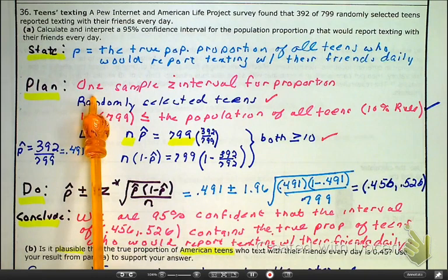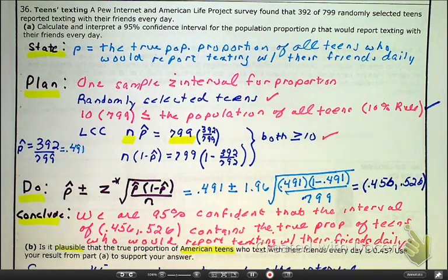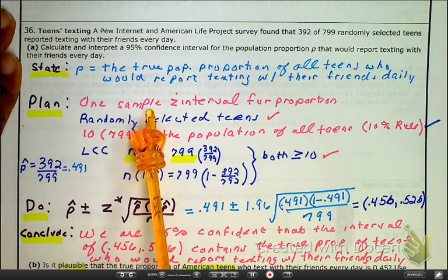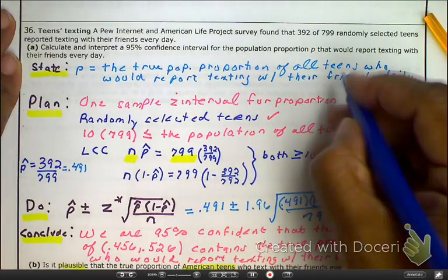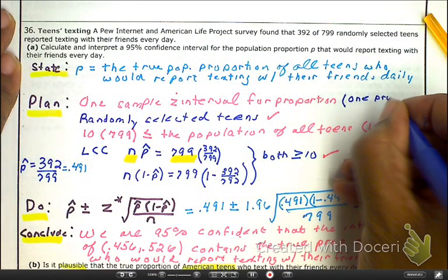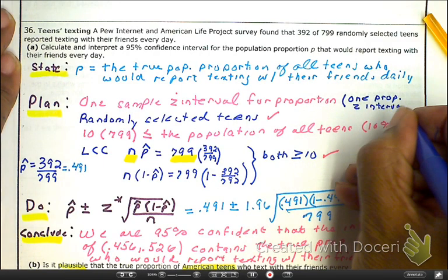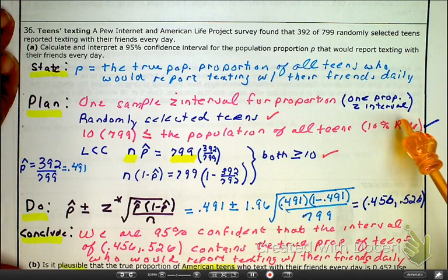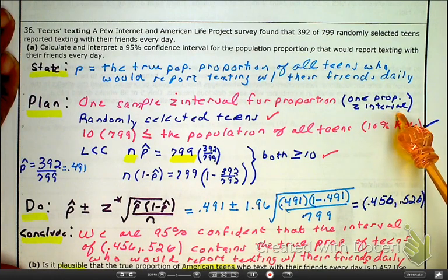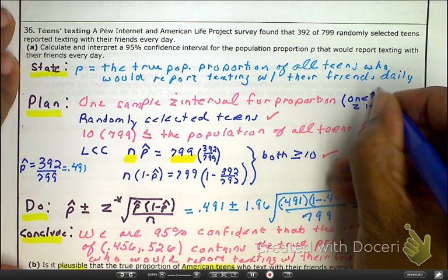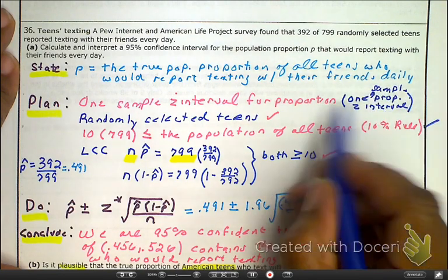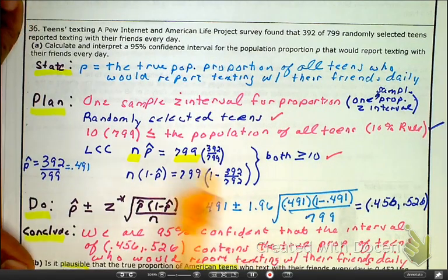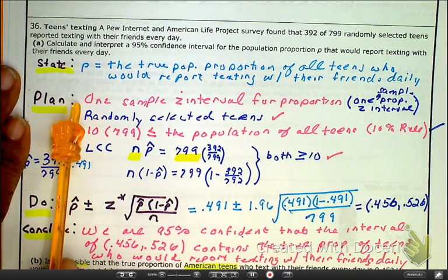Plan. And this is what I was referring to when I said, identify the inference method. Well, this is a one sample Z interval for a proportion. Or, we can say a one proportion Z interval. When we start putting this thing in the calculator, this is exactly what the calculator tells us. So, because of that, I personally like this one better. And it says everything. It's a one, and I should have said the word sample in here. And it's a proportion. And it's a Z interval. So, it says the same thing. And as we go on, you can make a decision on the best way you like it. So, we have done what I said. We have identified the inference method. So, check.